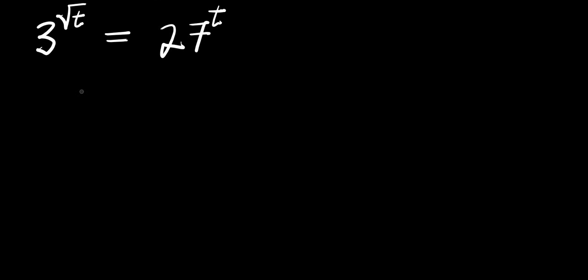Hello, how to solve this exponential problem? This is 3 raised to the power of square root of t equals 27 raised to the power of t. We are solving for all values of t that satisfy this equation.